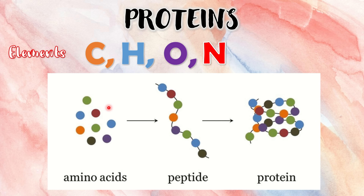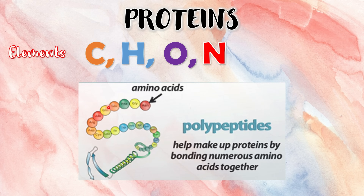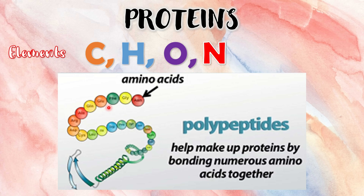Proteins consist of chains of amino acids called peptides. A protein may be made from a single polypeptide chain or may have a more complex structure where polypeptide subunits pack together to form a unit. Remember, some proteins contain other atoms such as sulfur, phosphorus, iron, copper, and magnesium.